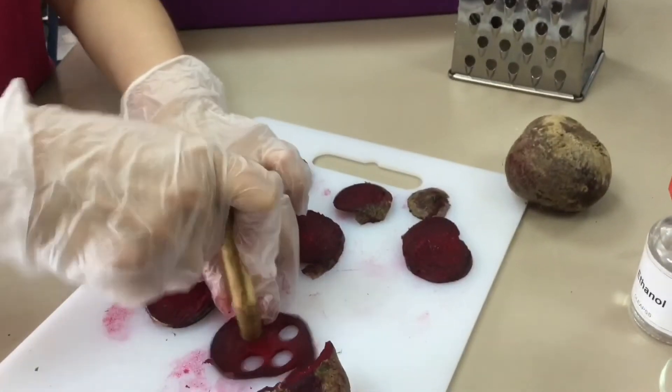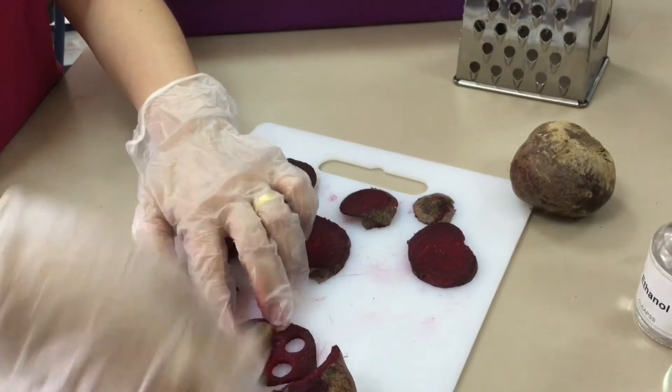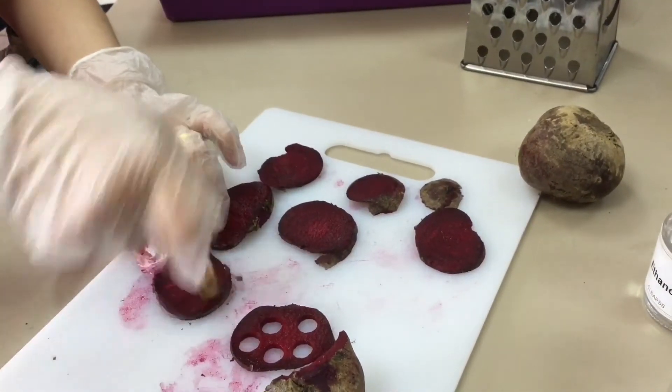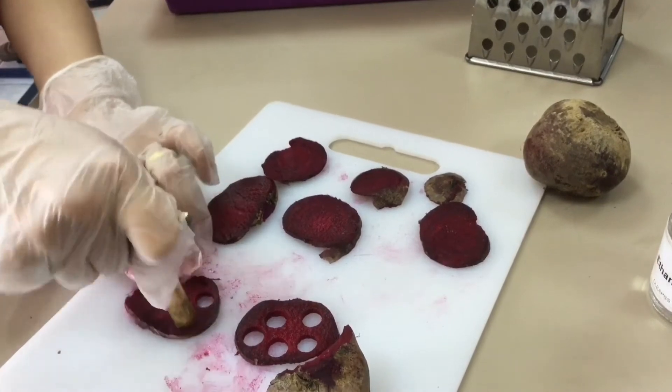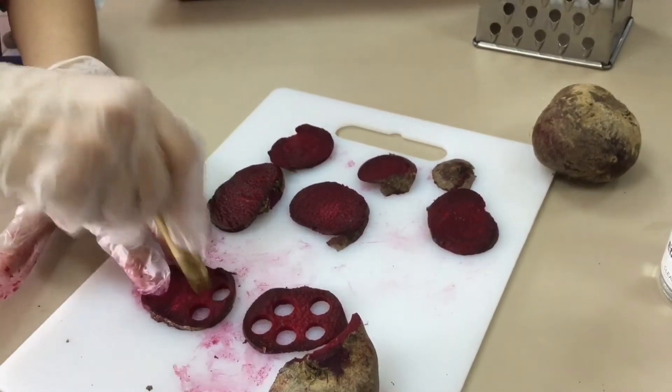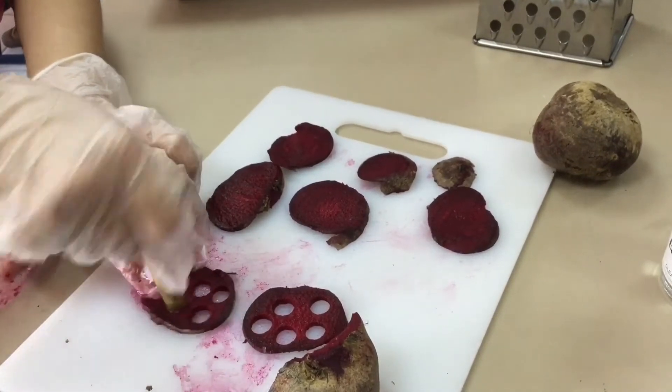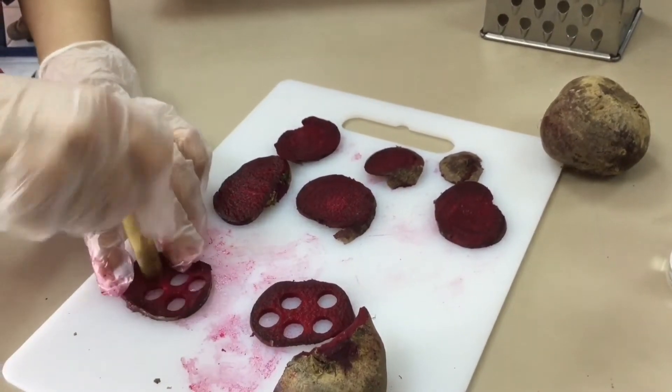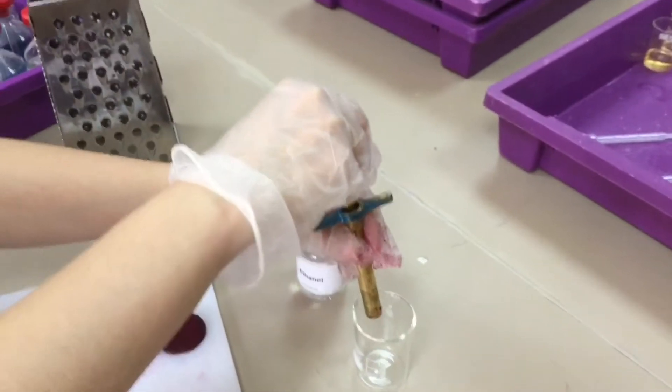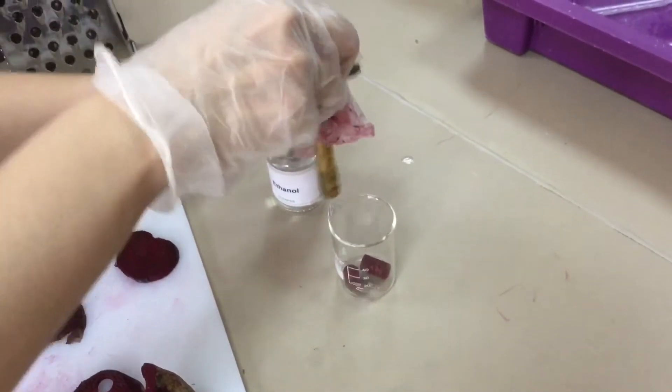To measure how permeable the cell surface membranes have become, we need to first of all produce a calibration curve and that's what I'm doing here. I've used a grater to produce standard thickness discs of the beetroot and I'm now using a cork borer to produce discs which will go into this beaker. I need to produce 20 discs.